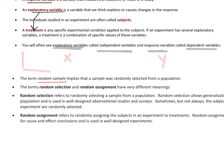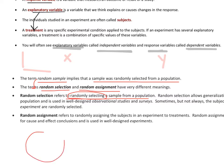Random sample implies that you are taking a sample randomly selected from a population. A random sample is very important because it tells you that you're doing random selection. Random selection refers to randomly assigning a sample from a population — you're randomly selecting people from a population and those people are now going to be your subjects in the experiment. Then we use random assignment. Random selection and random assignment are two different things. Random selection is when you take a selection of people from the population, and then you split that selection into two equal groups by randomly assigning them to two different treatments.